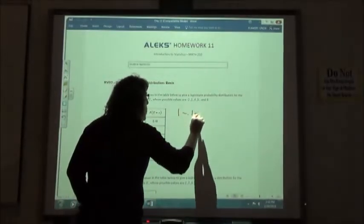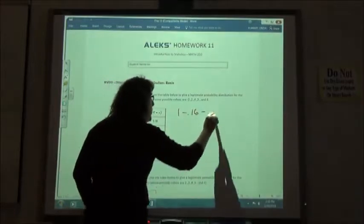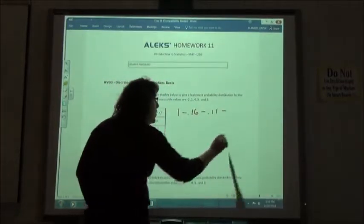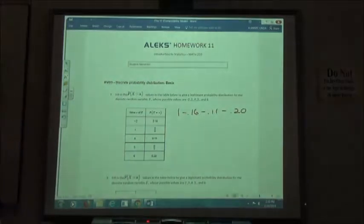So we know that one is 0.16, one is 0.11, and the other one is 0.20. If you take 1 and subtract those three that we already know, that's going to tell you how much we have left to divide up between our two other numbers.